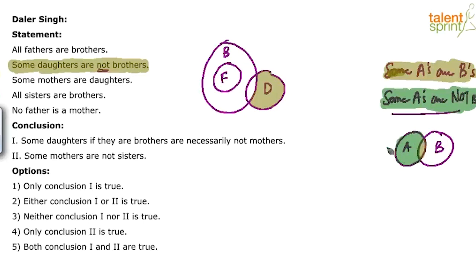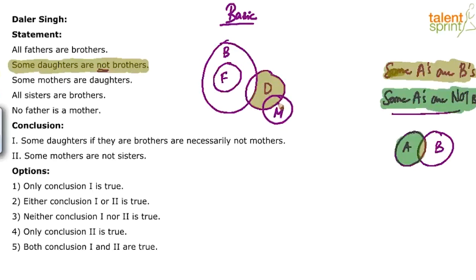When we say 'some daughters are not brothers,' we are referring to the daughters which are outside. Then 'some mothers are daughters' — we are drawing a basic diagram, which means minimum encroachment, minimum overlapping between different sets. So ideally we should draw mothers on this side, overlapping with only daughters and not with fathers and brothers.